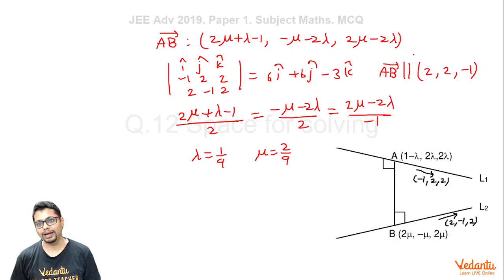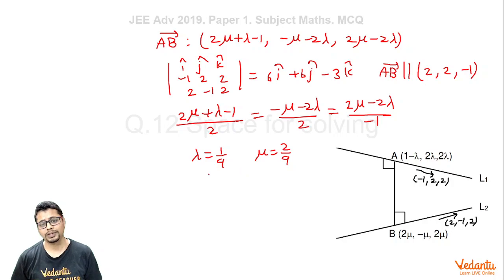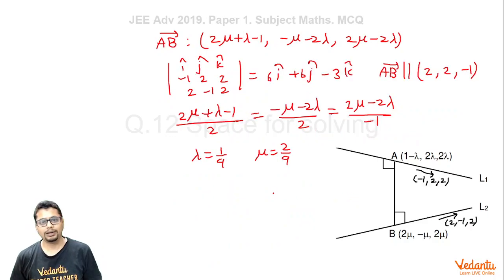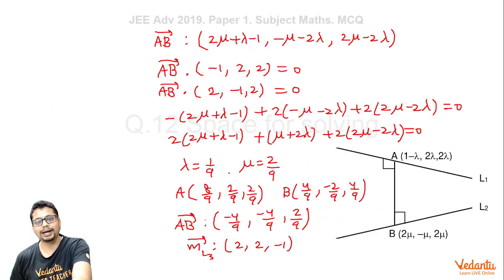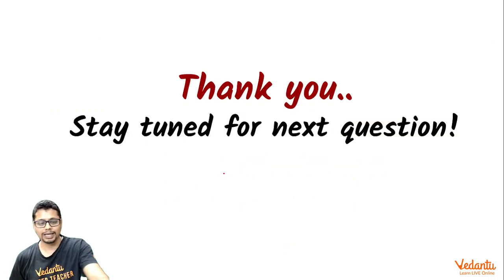Since we already have the direction vector, we just find one point (A or B) to write the equation of L3. The points are A = (8/9, 2/9, 2/9) and B = (4/9, minus 2/9, 4/9). Checking option C by making the j-cap component 0 again confirms options A, B, C as correct. These were the two methods for solving this question. I hope you enjoyed it. Thanks for listening, stay tuned for the next question.